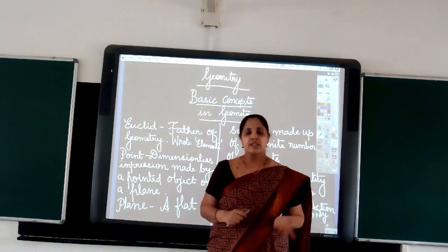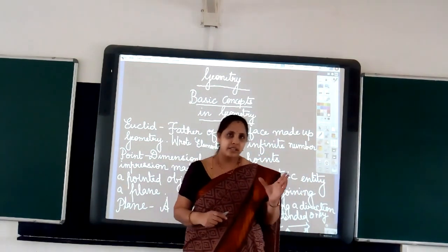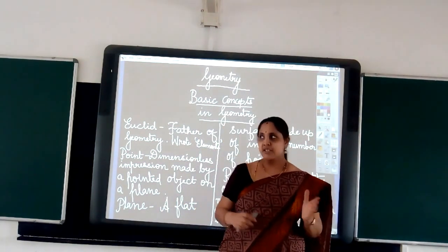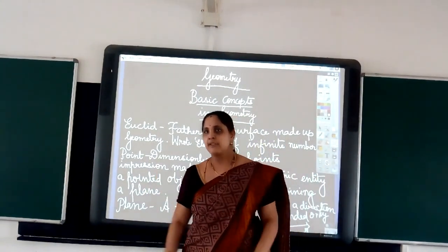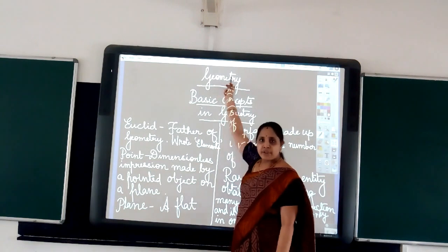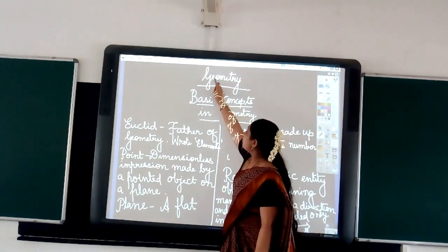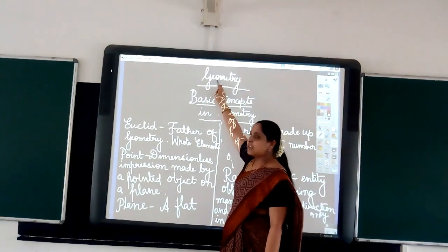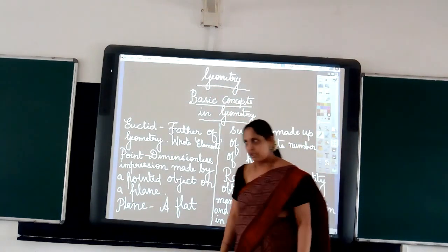First we have to understand that geometry is nothing but a branch of mathematics that was basically meant for measuring earth. The word geometry comes from two words: geo and metron. Geo meaning earth and metron meaning measurement.